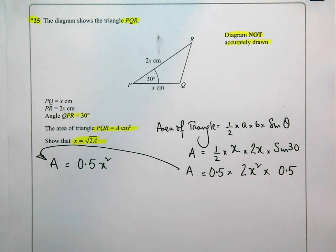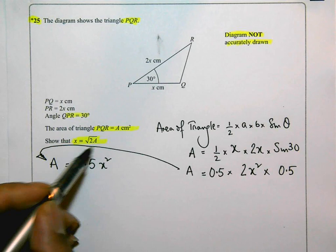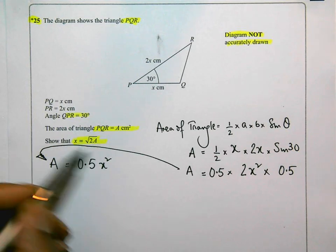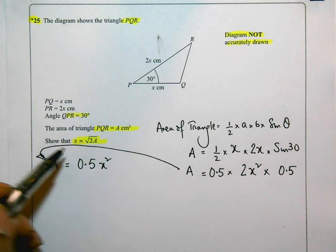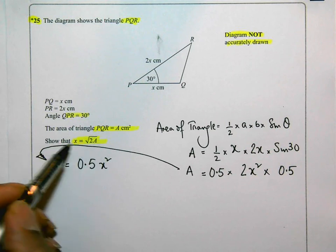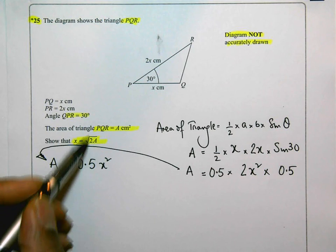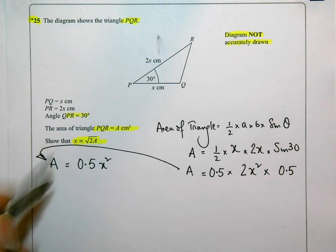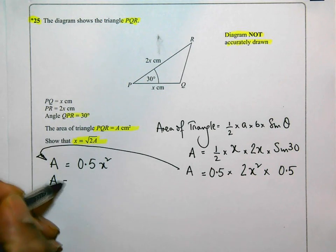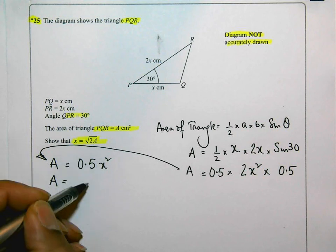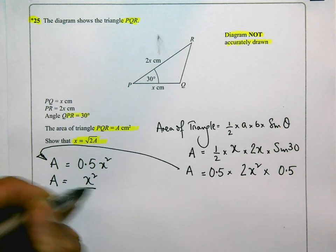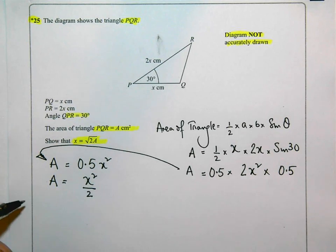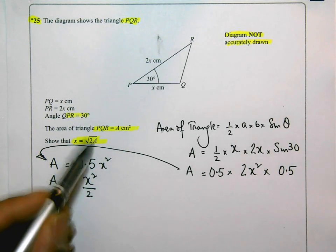And it seems like in this question here where they say show, they want me to rearrange this. They want me to rearrange this problem to show that X is equal to the square root of 2A. I'm going to rewrite this slightly. Because this is 0.5, I know it's a half. And that's the same as X squared divided by 2. The reason why I've done this is because I can see how I'm going to get this expression up here.